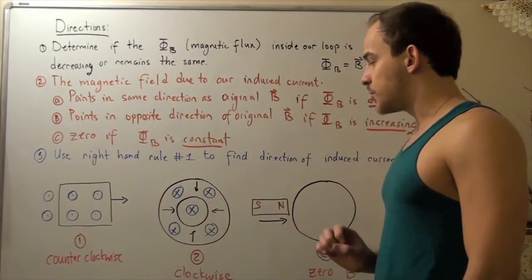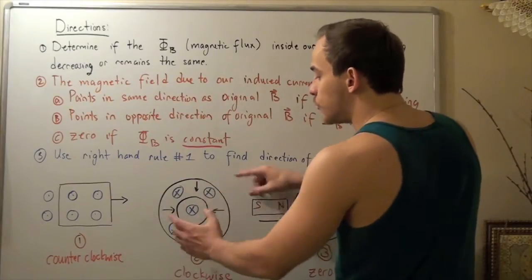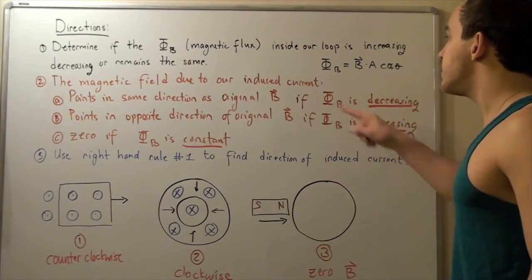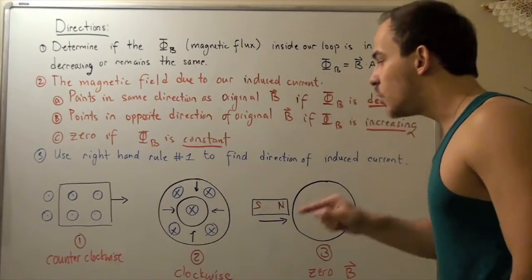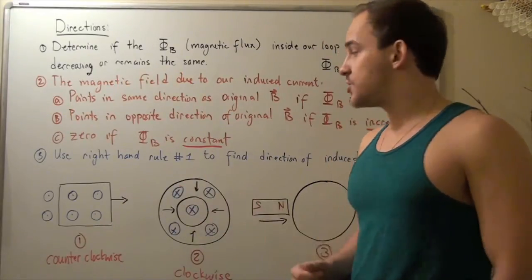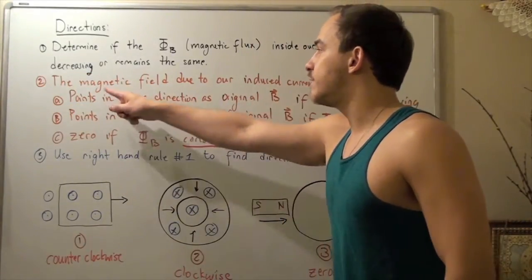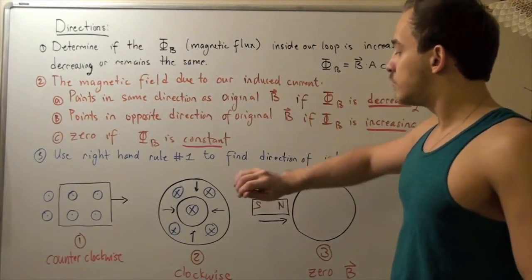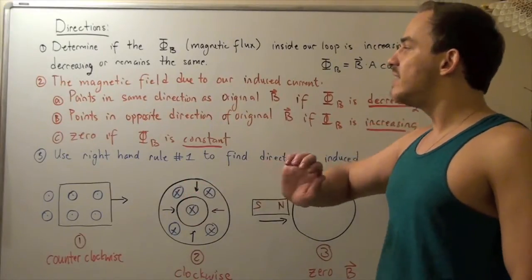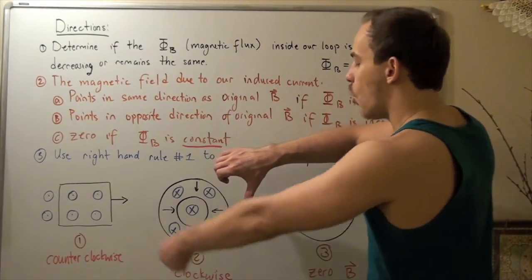In example two, what happens to magnetic flux as we shrink from a larger loop to a smaller one? The area decreases and B decreases, so the magnetic flux also decreases. The original magnetic field points into the page. Since flux is decreasing, we again choose option A — the induced magnetic field points in the same direction as the original, which is inward. Applying the right-hand rule by gripping the wire so the field goes inward, the induced current travels clockwise.